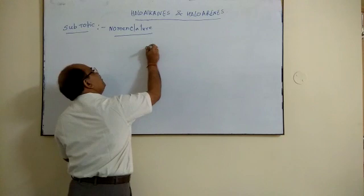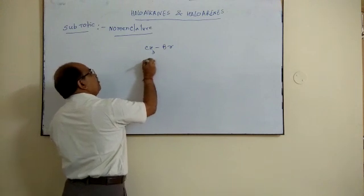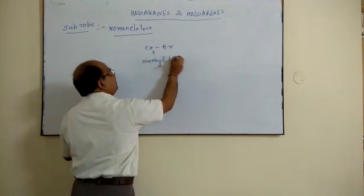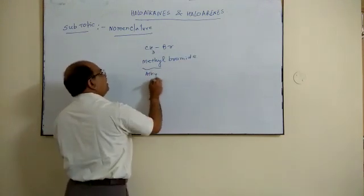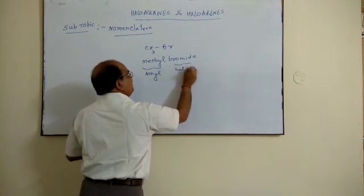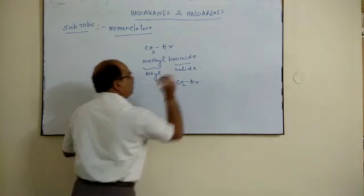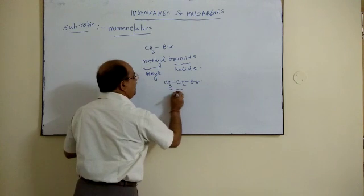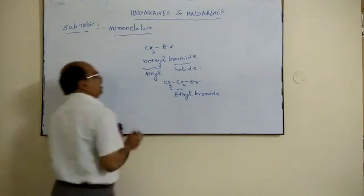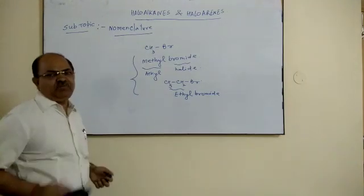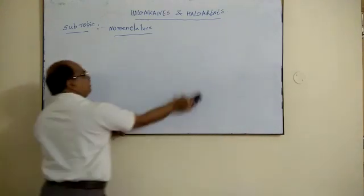For example, if we write CH₃Br, the trivial nomenclature is methyl bromide, because it is your alkyl halide — this is your alkyl and this is your halide. Similarly, if we have CH₃CH₂Br, the common name is ethyl bromide. But the more important nomenclature is not the common system but the IUPAC system.